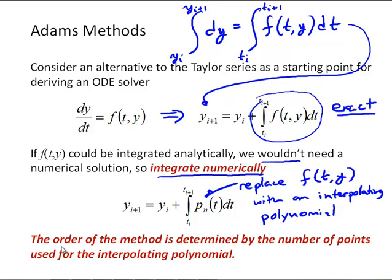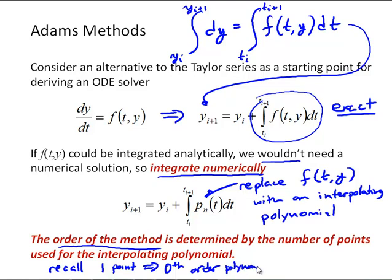Recalling our discussion of numerical integration, if we take a Newton-Cotes approach, we replace our ODE function f with an interpolating polynomial fit through previous points — the current i-th point and previous points in the solution — to capture information from previous steps. The order of the method is determined by how many points we use: one point gives a zeroth-order polynomial, two points give a line, and so on.